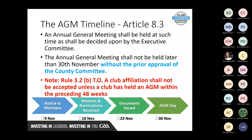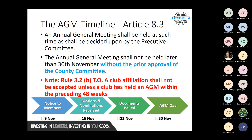An AGM should be held at such time as decided by the executive committee, but not later than the 30th of November. Prior to Congress, it was 'the 30th of November where possible' — that has now changed. Unless you get prior approval of the county committee, you must hold it by the 30th of November. It's a bit easier for clubs now because the financial year-end changed from the 31st of October to the 30th of September, making it easier to have financial statements in place.